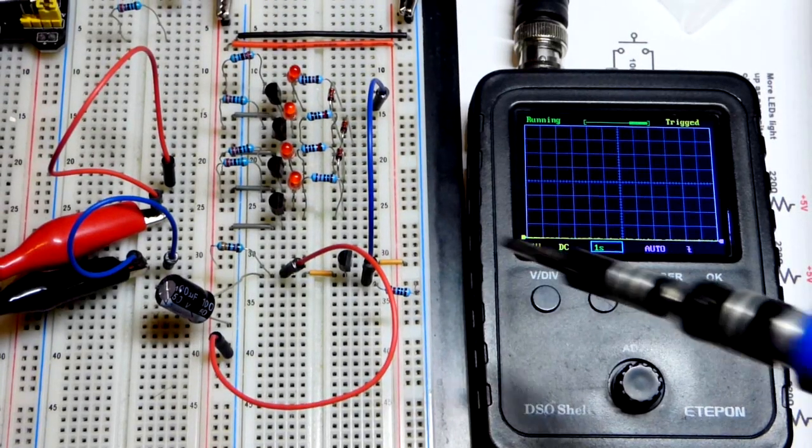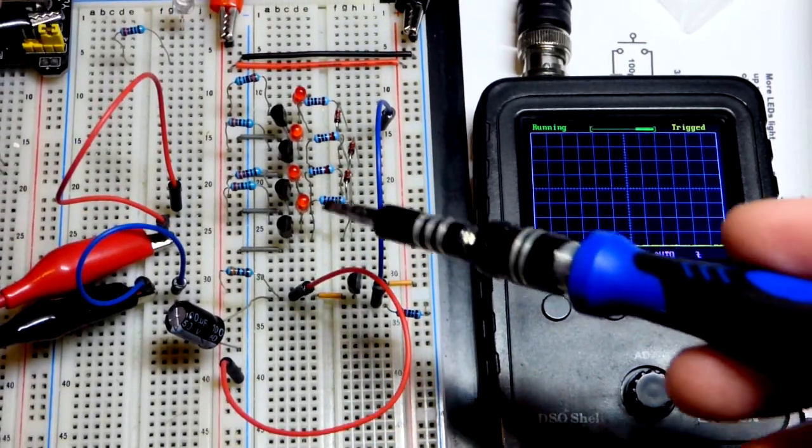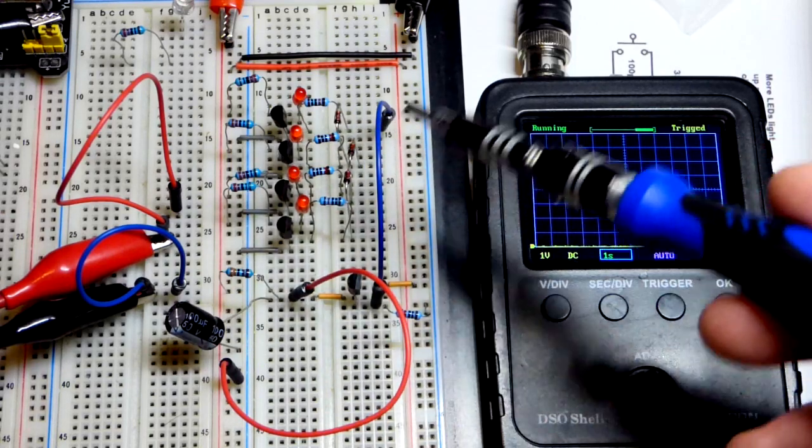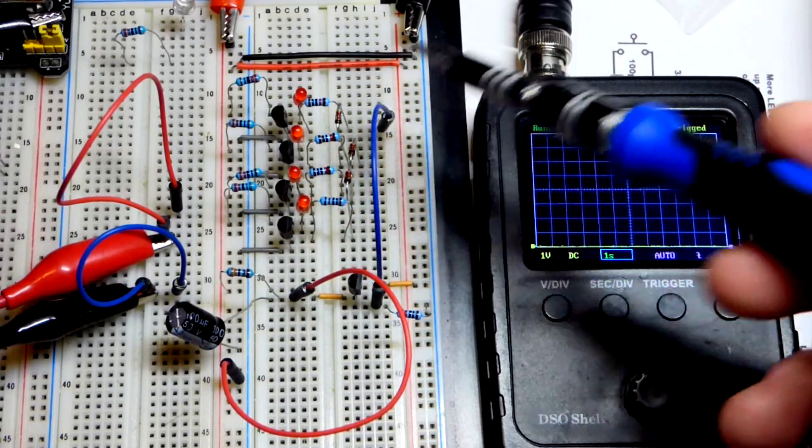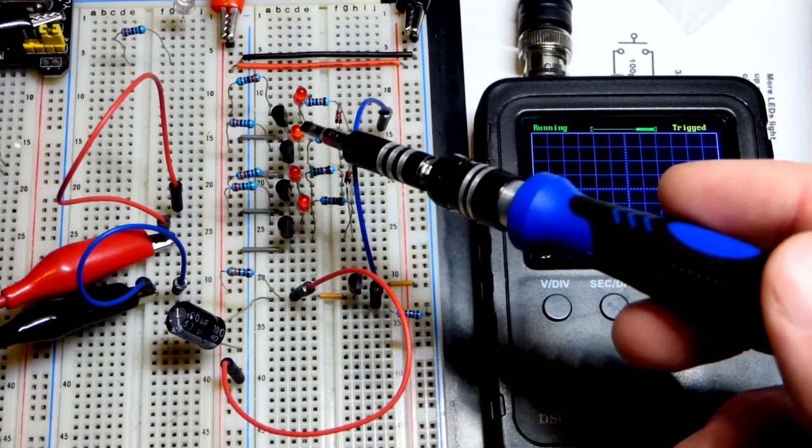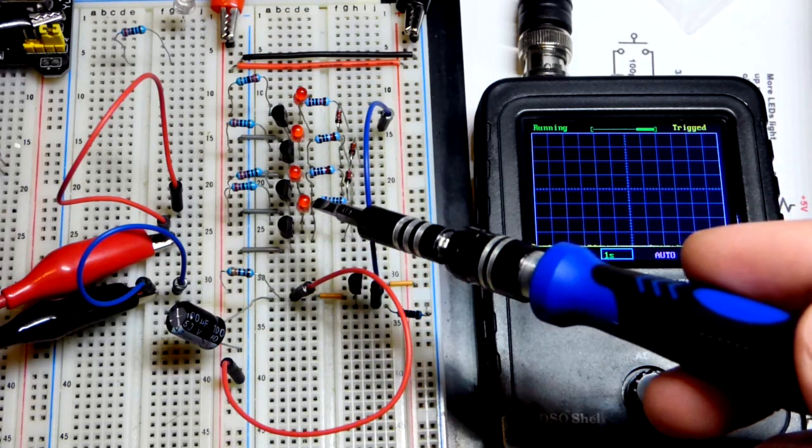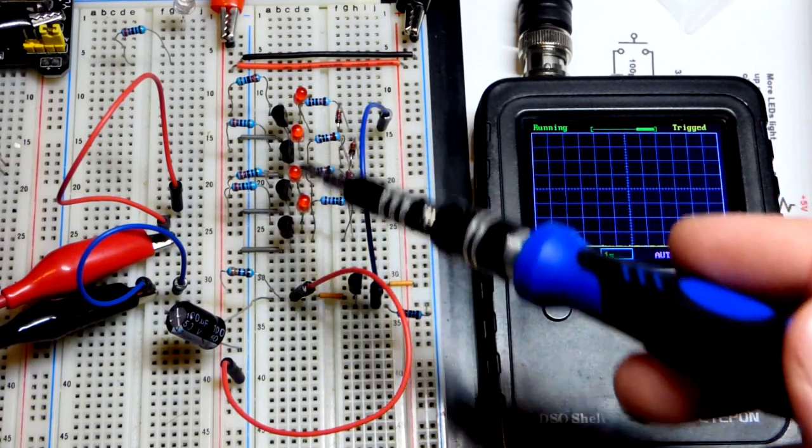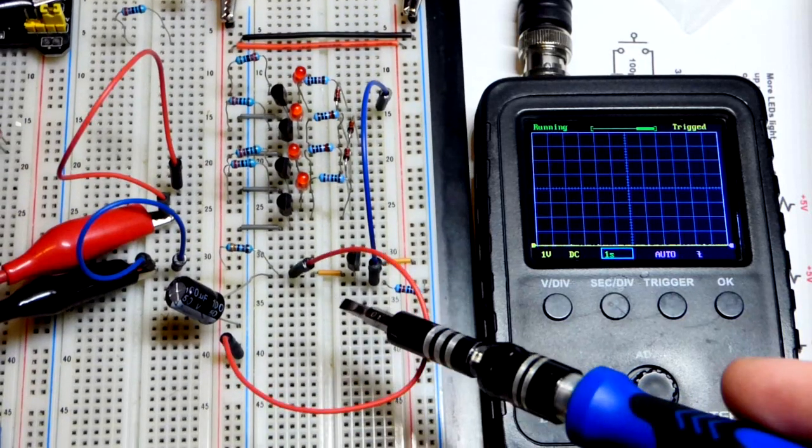So now the last three videos that we looked at involve this circuitry here. As the signal voltage right here rises, one after the other LED starts lighting up, and the other ones don't turn off. You just get more and more that are lit up as the voltage rises.